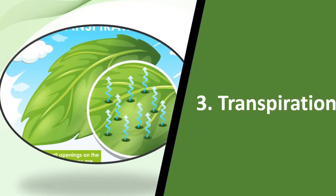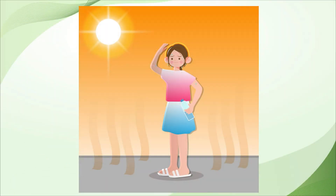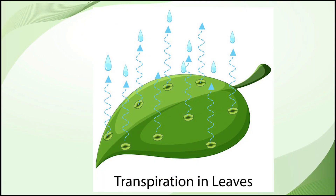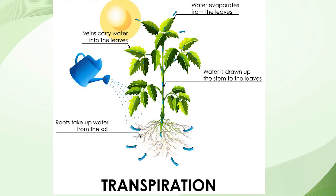Now let us learn about transpiration, the third function of a leaf. During a sunny day, when temperature and humidity are high, our body feels hot and starts sweating. Body sweat keeps our body cool. In a similar manner, plants also sweat to keep their body cool — by the process called transpiration. Transpiration is a process through which a plant releases its excess water into the air in the form of water vapor through stomata.